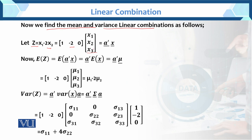So a = [1, -2, 0], and a-transpose = [1, -2, 0]. Now z = a-transpose x. Taking expectation on both sides: since a is constant, it comes outside the expectation, giving E[z] = a-transpose times E[x] = a-transpose mu. So E[z] = [1, -2, 0] times [mu1, mu2, mu3], which equals mu1 minus 2*mu2.